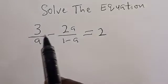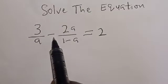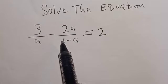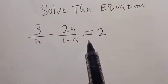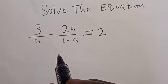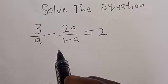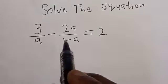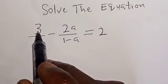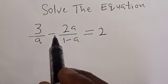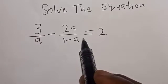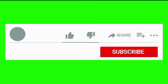Solve the equation: 3 divided by a, minus 2a divided by 1 minus a, is equal to 2. In this class we quickly want to find the value of a from this given equation: 3 divided by a minus 2a divided by 1 minus a is equal to 2.